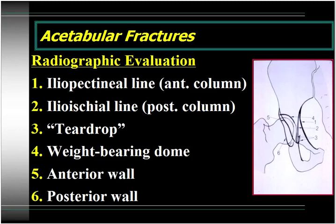Three is the teardrop, which is not an actual anatomical structure but a radiographic finding caused by the confluence of bony structures in that area. It is a good marker for the presence or absence of protrusion of the femoral head into the pelvis. Four is the weight-bearing dome of the acetabulum, where we are concerned about fractures that exit through this area. Five is the anterior wall and six is the posterior wall of the acetabulum. Remember that the acetabulum is anteverted, so the posterior wall projects more laterally than the anterior wall.